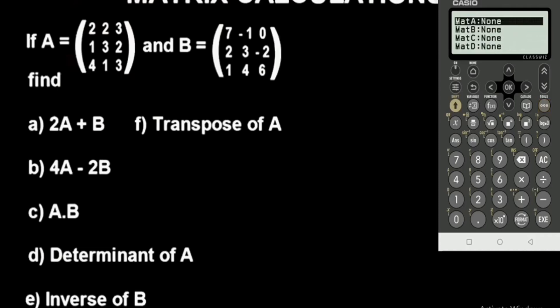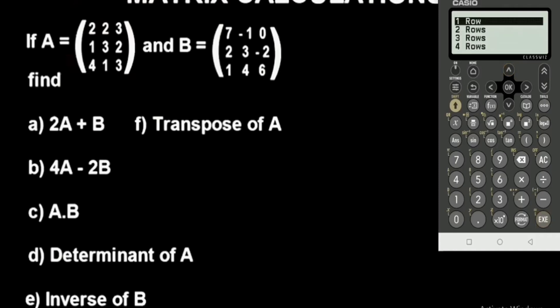Press 2 to define a matrix. We have two matrices: Matrix A and Matrix B. For Matrix A, press execute, select Mat A. We have a 3 by 3 matrix — three rows and three columns. The vertical axis is the column, the horizontal axis is the row. Set rows to three and columns to three.